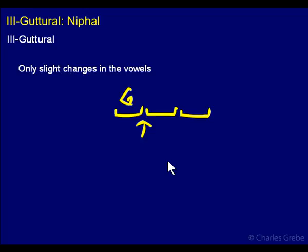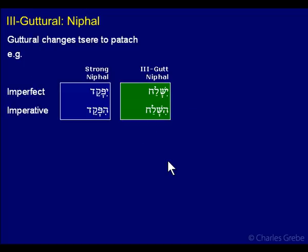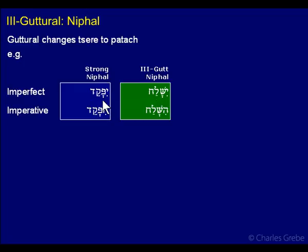So let's see what happens in the Niphal. The guttural changes the tsere to a patach. So we have a tsere here — yippaqed becomes yishlach. Or hippaqed, the imperative — remember the imperative in the Niphal has this hey there — hippaqed becomes hishlach. So all this changes the last vowel. The guttural likes 'a' vowels, so it changes tsere to an 'a' vowel, a patach.